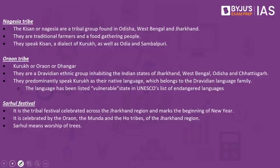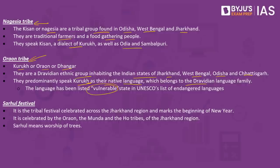The article mentions different tribal groups. The Nagesia or Kisan tribe is found in Odisha, West Bengal, and Jharkhand — traditional farmers and food-gathering people who speak Kisan, a dialect of Kuruk, as well as Odia and Sambalpuri. The Oraon tribe, also called Kuruk, Oraon, or Danga, is a Dravidian ethnic group in Jharkhand, West Bengal, Odisha, and Chhattisgarh, speaking Kuruk — a language listed as vulnerable in UNESCO's list of endangered languages. They celebrate the Sarhul festival, marking the tribal new year celebrated by the Oraon, Munda, and Ho tribes of Jharkhand, which involves worship of trees and elements of nature.